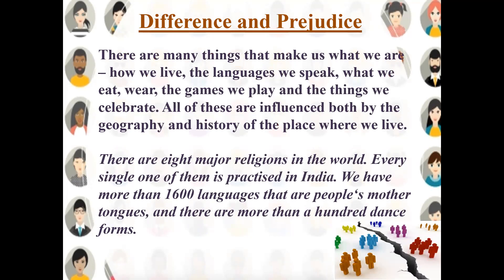There are many things that make us what we are — how we live, the language we speak, what we eat, what we wear, the games we play, and the things we celebrate. All of these are influenced both by the geography and history of a place where we live. There are eight major religions in the world and every single one of them is practiced in India. We have more than 1600 languages as people's mother tongue and more than 100 dance forms. Yet this diversity is not always celebrated. We feel safe and secure with people who look, talk, dress, and think like us.